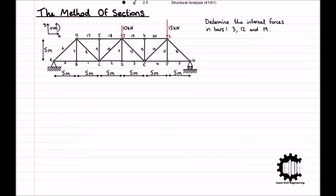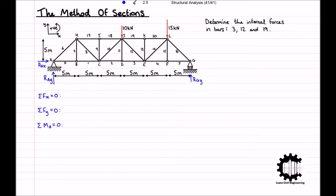The first step for the method of sections is to calculate the reaction forces at the supports. Assuming senses for the support reaction forces, we have a horizontal and vertical force at the hinge support and only a vertical force at the roller support. We apply the conditions of equilibrium: the sum of all horizontal forces must equal zero, the sum of all vertical forces must equal zero, and the sum of all moments relative to a point must equal zero. We will choose node A to take the moments about.